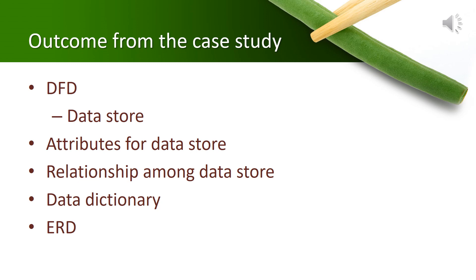You will identify the required fields in the data store — sometimes we call them attributes. From there, we will draw a so-called storyboard to show the relationship among the data stores. Then identify the sample data for each data store, and after that create the data dictionary.